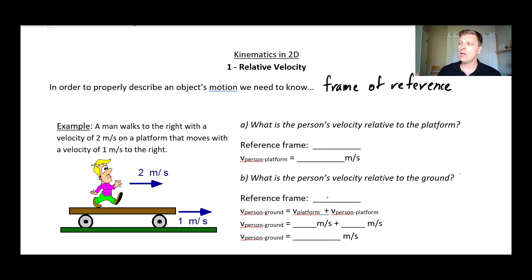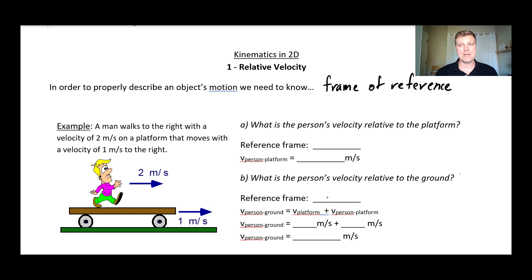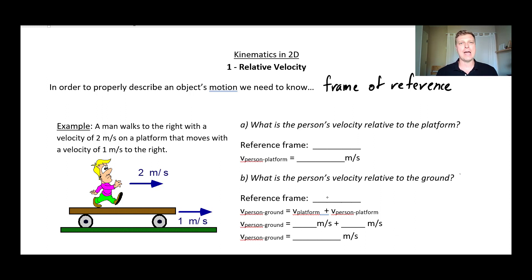Relative to the frame of reference of the inside of the car, you are 100% correct. You might look at a passenger beside you and notice that they're not moving either, and you both agree that you are not moving. You could take a ball and throw it up in the air, and it would go up and come right down as though you were sitting still anywhere on the earth. But if you were to look out the window and see your friend standing on the side of the road as the car drives by, your friend would say, no, you are definitely moving. And that's because they are in a different frame of reference. The key here is that in physics, all the rules of physics have to apply within a given frame of reference, but two people in different frames of reference might disagree about what's going on.